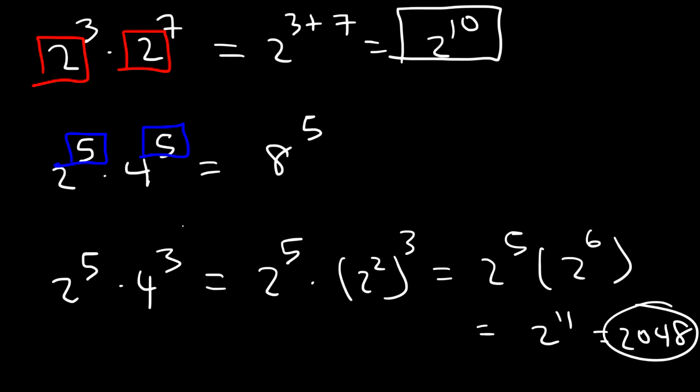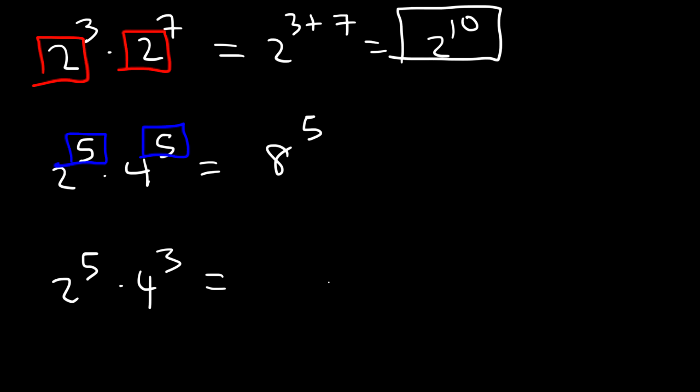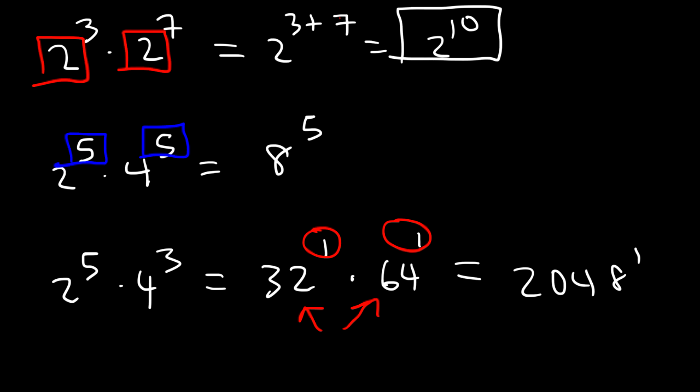But now let's do it another way. Another way in which you could do it is you can convert it to the same exponent. 2 to the 5th power is 32, or 32 to the 1st power. 4 to the 3rd is 64. So if you multiply 32 by 64, you're going to get 2048 to the 1st power. So as you can see, whenever you have the same exponent, you can simply multiply the bases. And if you have the same base, you can add the exponents.